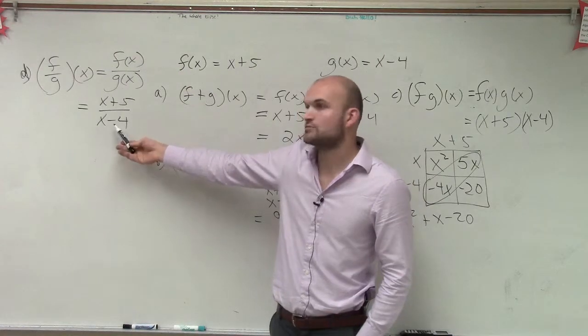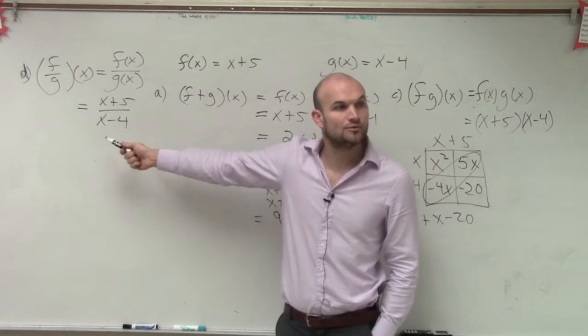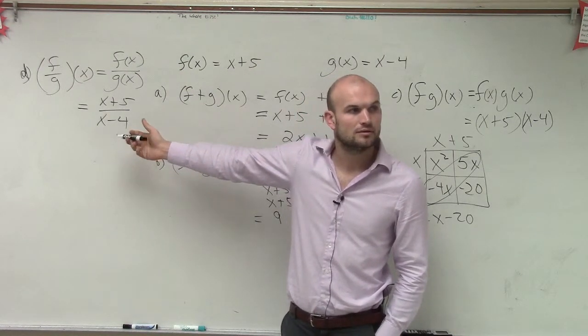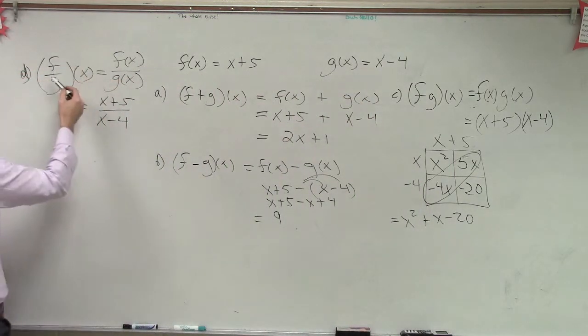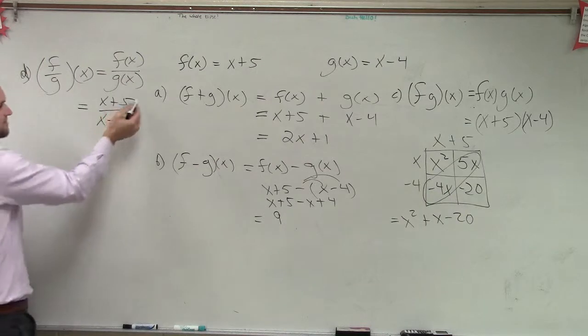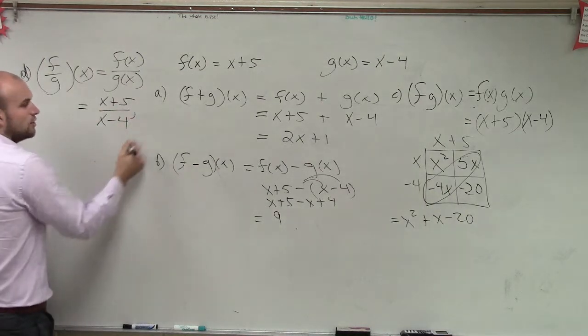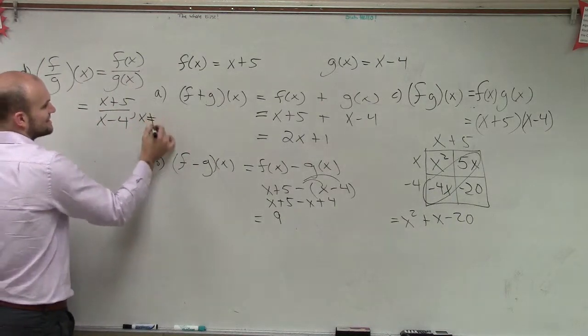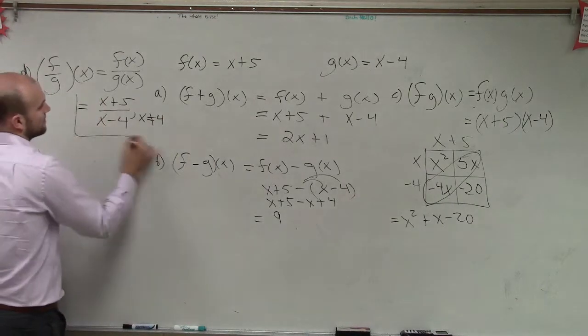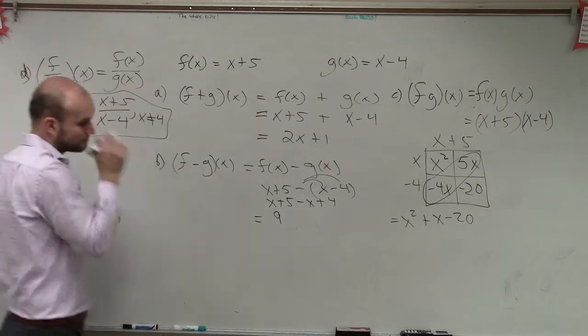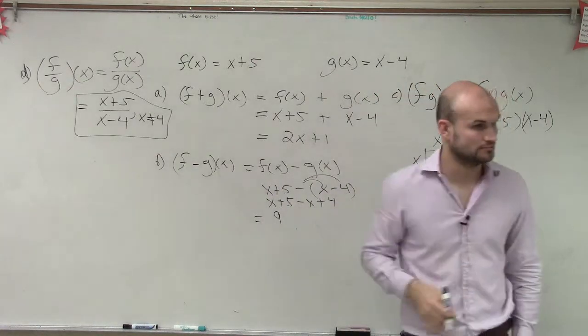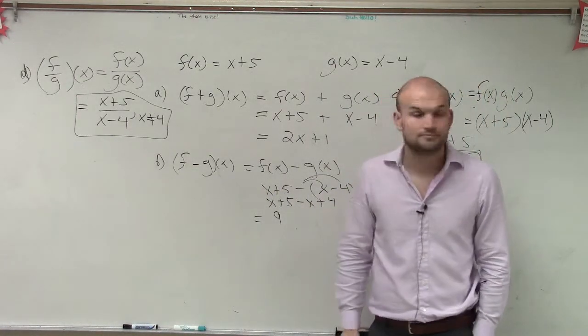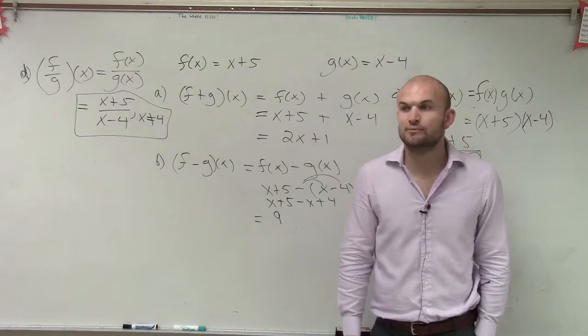And the only constraint we found is what's the only value that x cannot equal in this problem? Four. So therefore, we say the division of f divided by g of x equals x plus five divided by x minus four, with the constraint x cannot equal four. Is it always going to be like x cannot equal the bottom number? Whatever is going to make the bottom number zero.